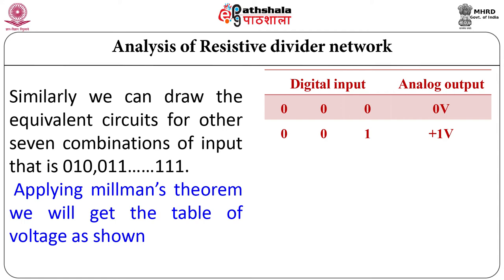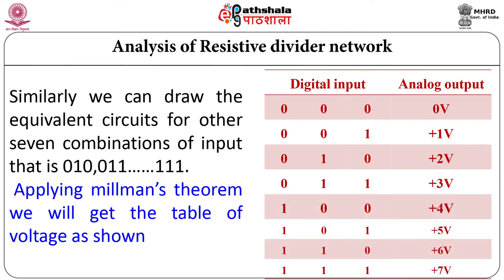Considering the contribution of other bits, we can draw equivalent circuits for all 7 remaining combinations: 010, 011, and so on up to 111. Applying Millman's theorem for each input combination, we get a table of voltages. For digital input 000, analog output is 0 V; for 001, output is 1 V; for 010, output is +2 V; continuing up to digital input 111, analog output is +7 volt.